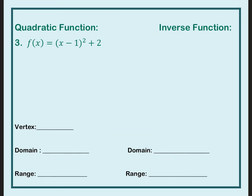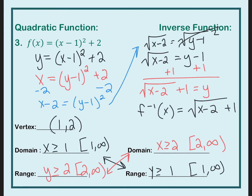Go ahead and try this one on your own — pause the video here and try to find that inverse function. To check: first I switched x and y, then my goal was to solve for y. I subtracted 2 from both sides, then took the square root since one side was squared. Once I took the square root, I added 1 to the other side, putting the plus 1 after the radical. The inverse function equals the square root of x minus 2, all of that plus 1.